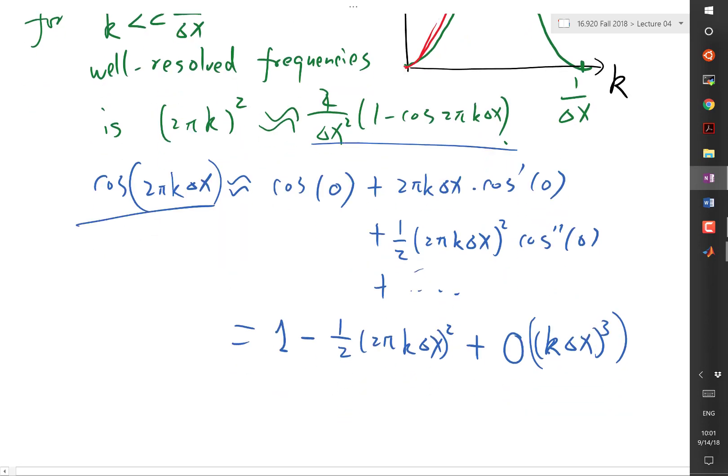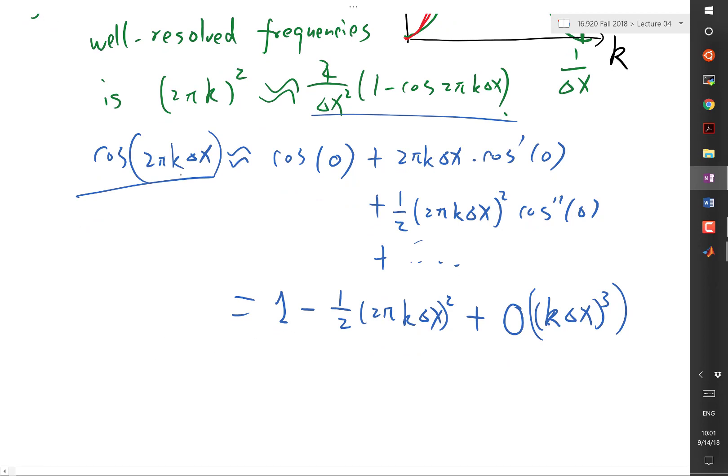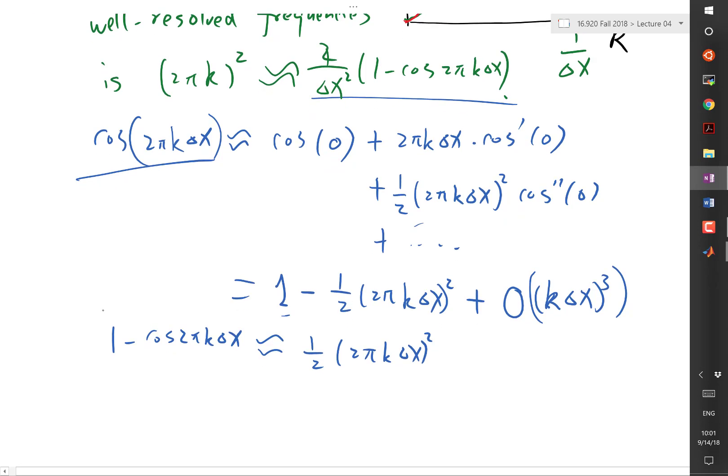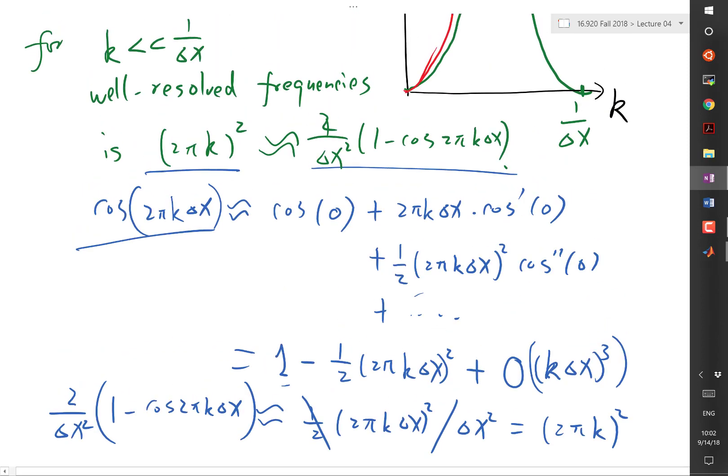Now let's plug this into the Taylor series expansion. What we get is 1 minus cosine 2 pi k delta x is approximately equal to, well, the one cancels. We get a half of 2 pi k delta x square. And then if you multiply this by 2 over delta x, we get this canceled. We have over delta x square, we get 2 pi k square. That's exactly that. So basically what we are seeing is that the analytical and numerical solution, they agree with each other for small wave numbers, for well-resolved frequencies. That's one good thing to know.